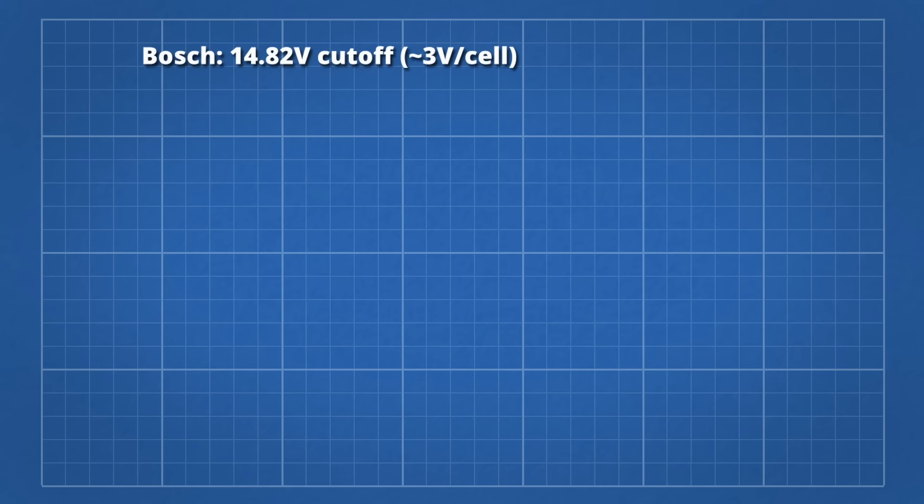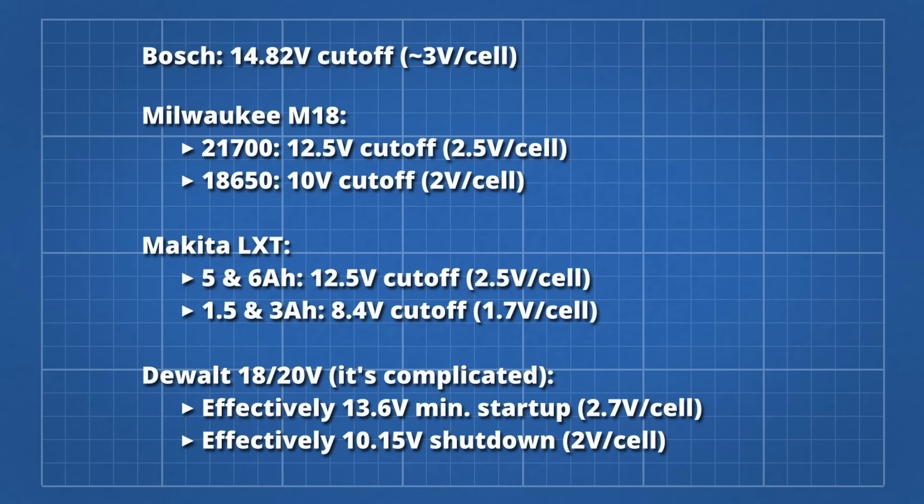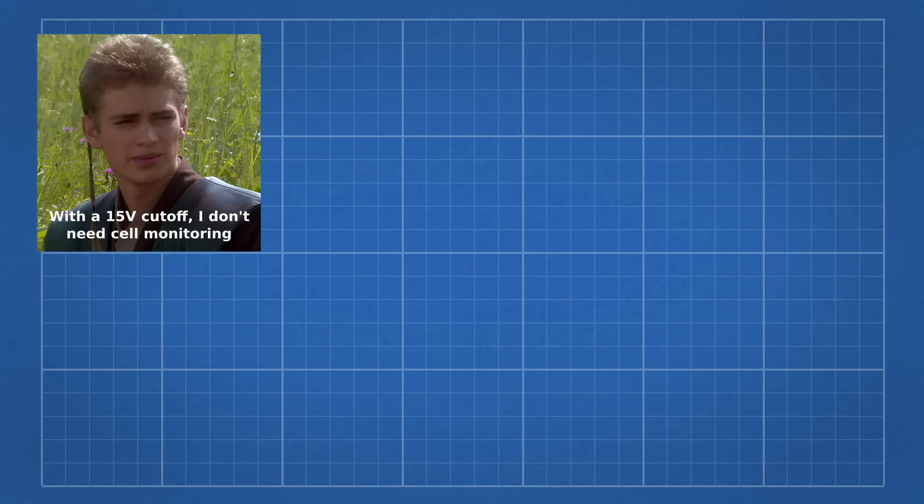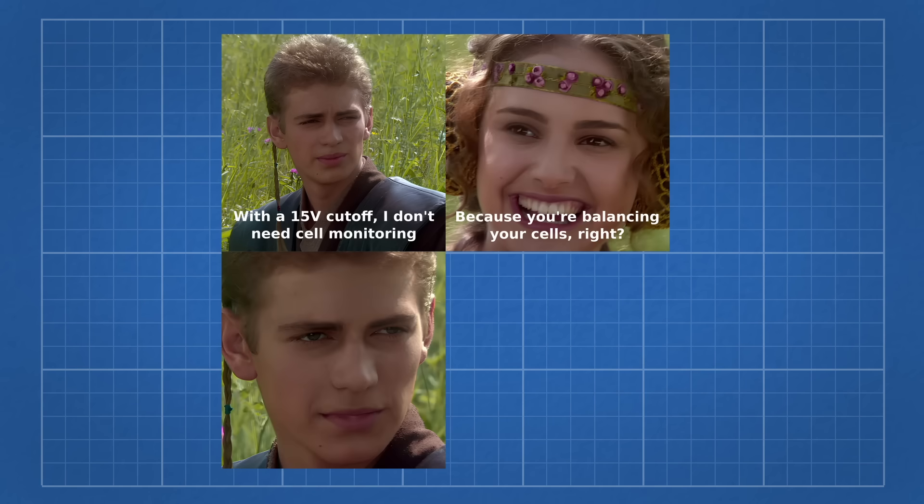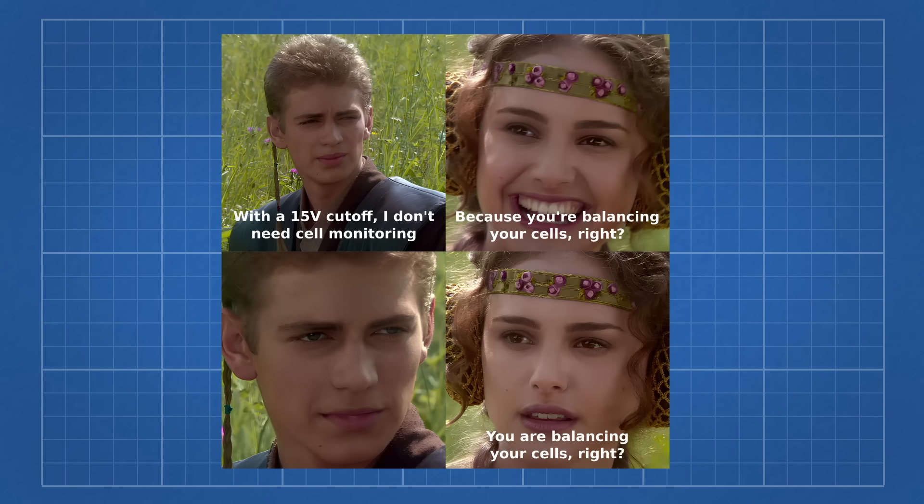15V is a very conservative voltage cutoff. Most 18V systems cut off at 12.5V, and Milwaukee and Makita go even lower on some of their batteries. So the lack of individual cell monitoring isn't a big deal unless Bosch aren't balancing their cells. You are balancing your cells, aren't you, Bosch?